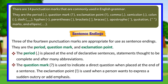The period is placed at the end of declarative sentences, statements thought to be complete, and after many abbreviations. The question mark is used to indicate a direct question when placed at the end of a sentence. The exclamation point is used when a person wants to express a sudden outcry or add emphasis.